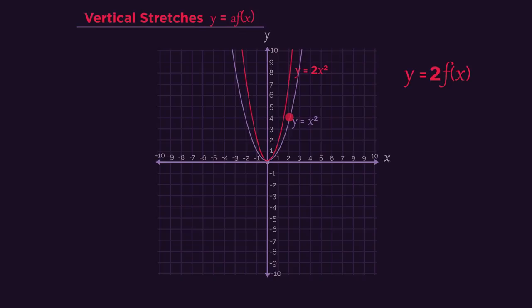Here, 4 needs to double to 8, so every y-coordinate doubles in size. If the new curve was y equals 3x squared, then every y-coordinate would need to multiply by 3. So 1 goes to 3, and so on.